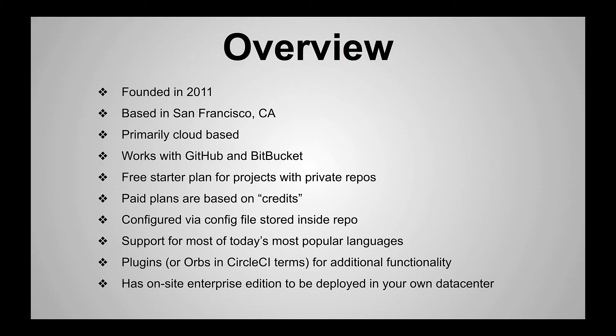They do have plugins — similar to Jenkins plugins but called Orbs in Circle CI — for additional functionality. There are orbs for AWS and for SonarCloud to do security scanning on your code automatically. I'll link those in the description below. As mentioned earlier, they also have an enterprise edition you can purchase to be deployed in your own data center on your own servers, which is one way large organizations can utilize Circle CI.